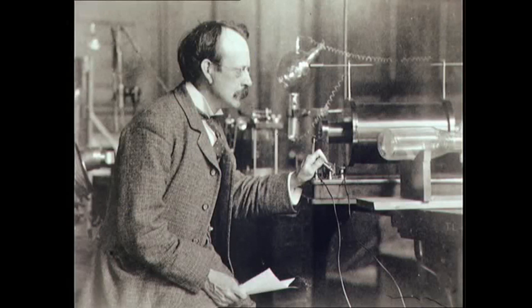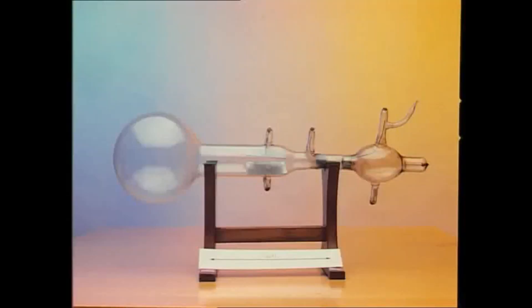This idea was changed in 1897 by J.J. Thompson. He was investigating the properties of cathode rays using this piece of equipment, an empty glass tube.